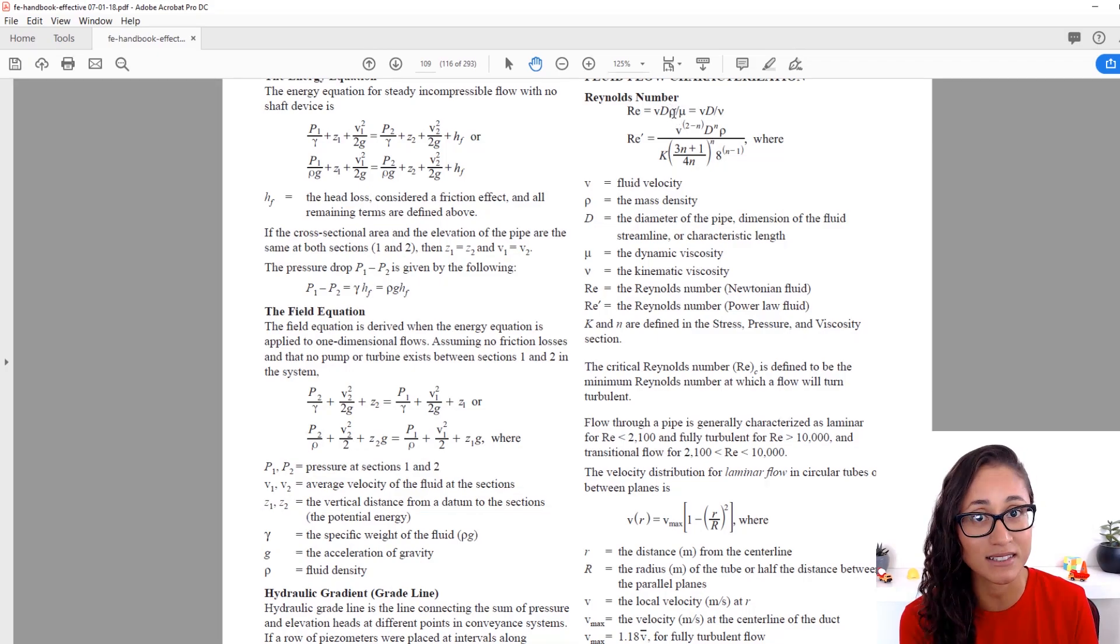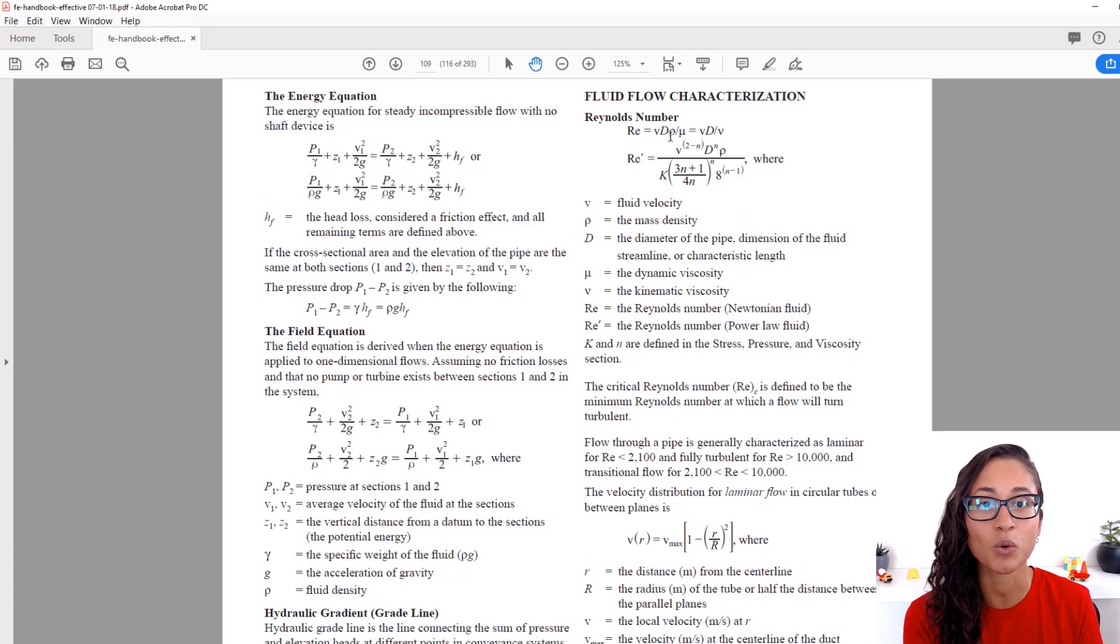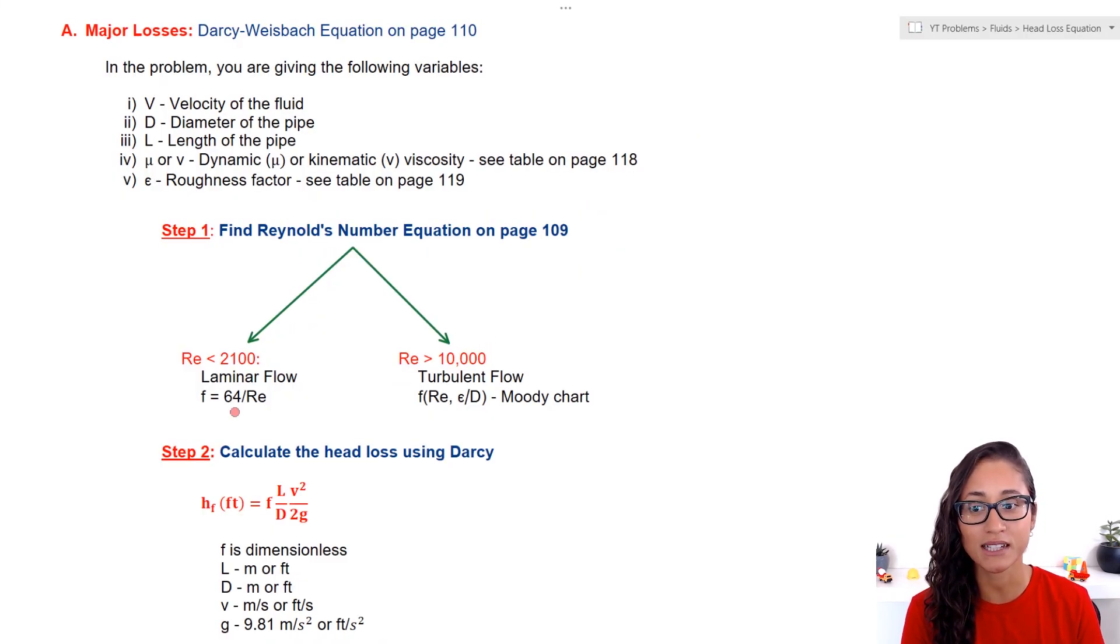We have two equations. One has dynamic viscosity and the other one has kinematic viscosity. Note, this one has density. So which one do you use? Well, it depends whatever you're given in the problem. If Reynolds number is less than 2100, it means that we have laminar flow. And to calculate the friction factor, we usually use this equation: it's equal to 64 over Reynolds number.